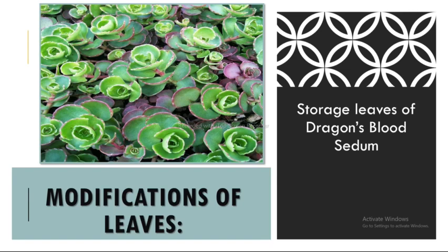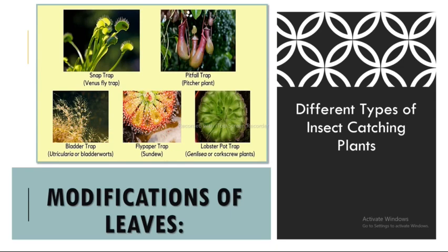Now discussing insect-catching plants in detail. There are five types. First is the snap trap, also known as Venus flytrap. In Venus flytrap, the plant catches spiders and insects by snapping its trap leaves. This mechanism is activated when unsuspecting prey touches highly sensitive trigger hairs twice within 30 seconds. Research has shown that a single slow touch also triggers the trap, probably to catch slow-moving larvae and snails.